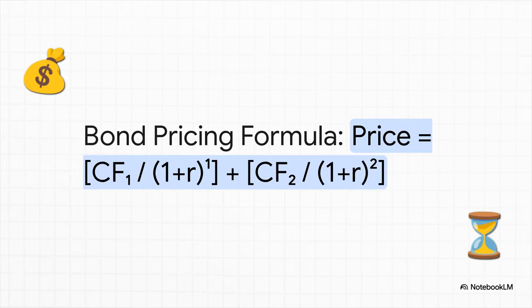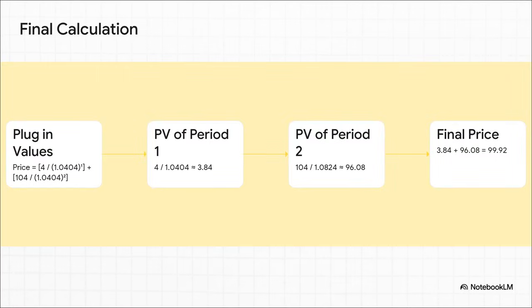To find the price today, we use a classic discounted cash flow formula. All we're doing is taking those future payments and asking: what are they worth in today's money? We take that first cash flow of $4 and discount it back one period, then take the big final payment of $104 and discount it back two periods, using our 4.04% rate. Add those two numbers together, and that gives us the price of Bond A.